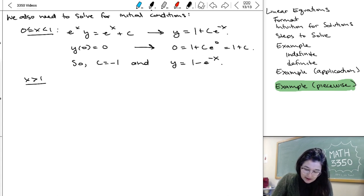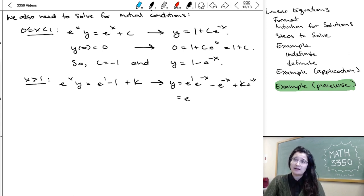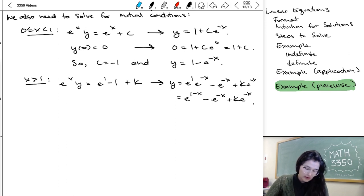And then, for x greater than 1, we've got e to x y is equal to that e to 1 minus 1 plus k. So where we took that definite integral from 0 to 1, and we went ahead and held on to this unknown constant for that integral that was 0 going up to some unknown value x. So in this case, y is e to 1 e to minus x minus 1 e to minus x plus k e to minus x. And if you wanted to do algebraic simplification, remember, you add together exponents that multiply each other, so that's going to become e to 1 minus x minus e to minus x plus k e to minus x.